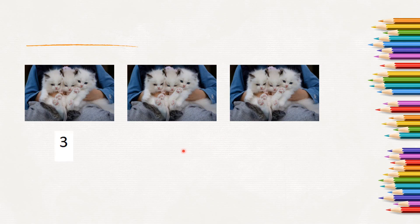Look at an example here. There are 3 groups of 3 kittens. There are 3 kittens in each group. To find out how many kittens there are in all, we need to add 3 plus 3 plus 3. So, 3 plus 3 plus 3 will be 9. There are 9 kittens in all.